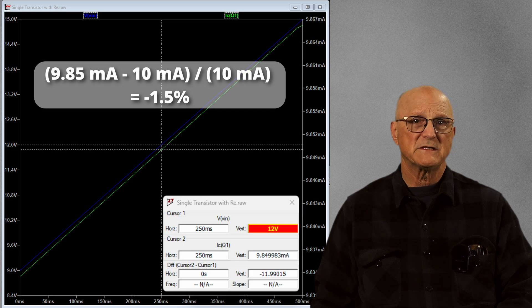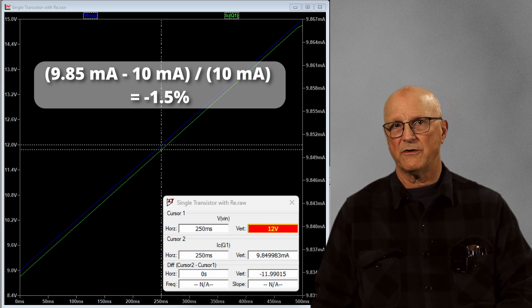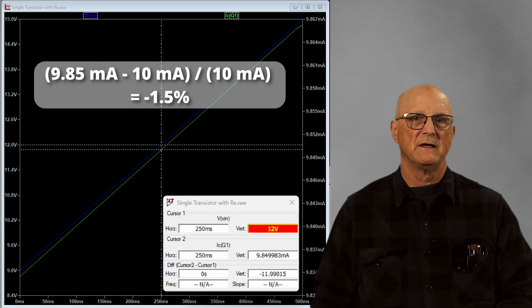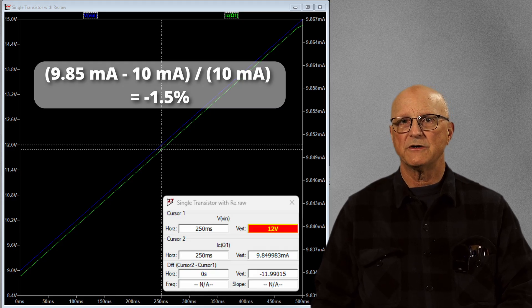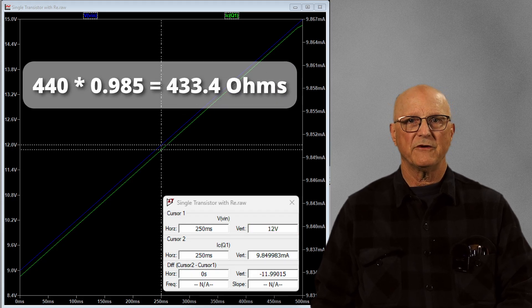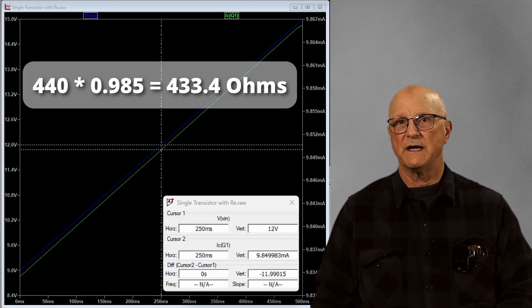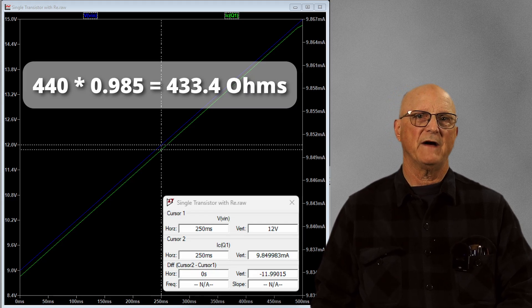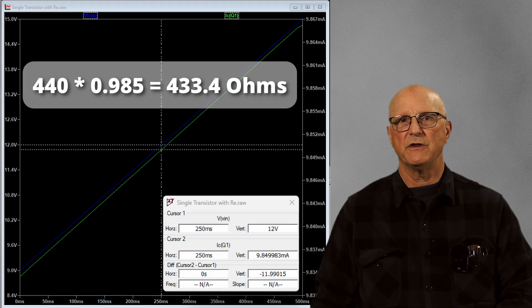In part, this is because we did not include the base current in the emitter current in our calculation. This resulted in a larger value for the emitter resistor. I reduced the emitter resistor value by 1.5% that the collector current was low by. This gave me a value of about 433 ohms.